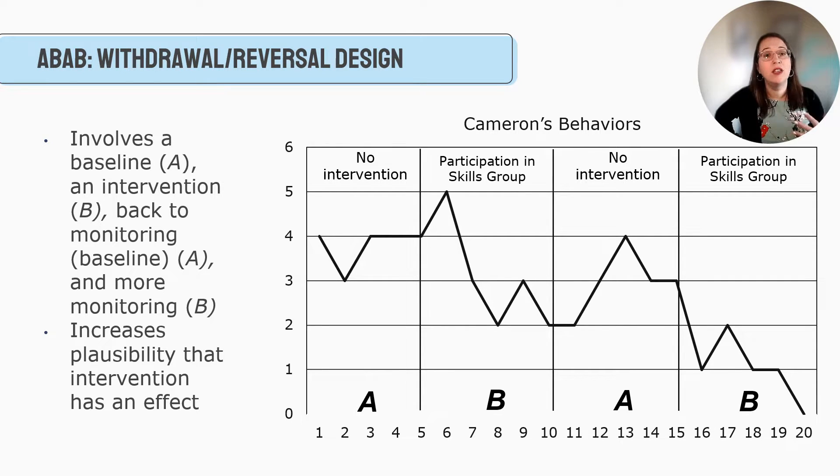One thing that's hard with this is a lot of clinicians feel weird withdrawing an intervention, especially if we can see that it's starting to work. So Ruben and Babbie suggest using something like a natural break, like a school break. Or if you start to see that this kid is really struggling, jumping right back in to implement an intervention again, because we don't want Cameron to go back to being in the office all the time. So ABAB is a stronger case that our intervention is working.